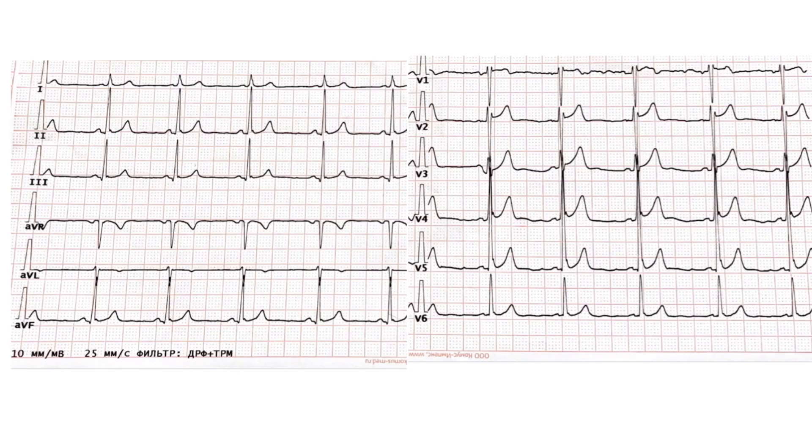Analyzing the type of early repolarization, we observe changes in the terminal part of the QRS complex with notching at leads 2, 3, AVF, V4, V5, and V6.